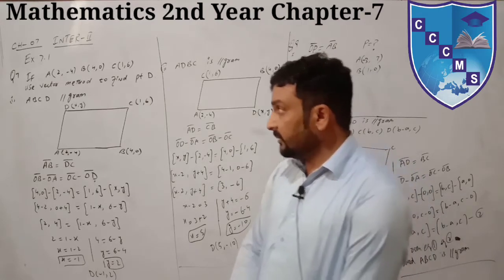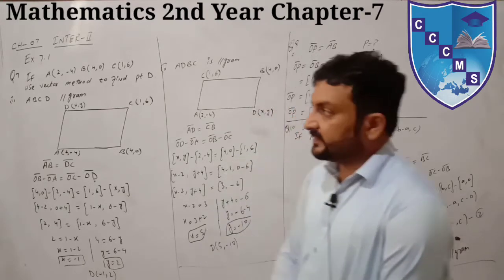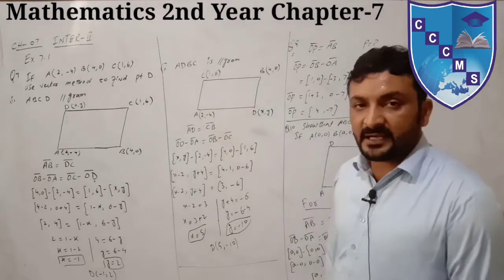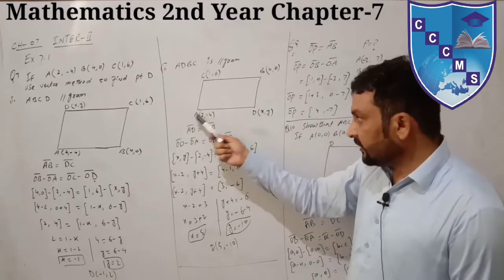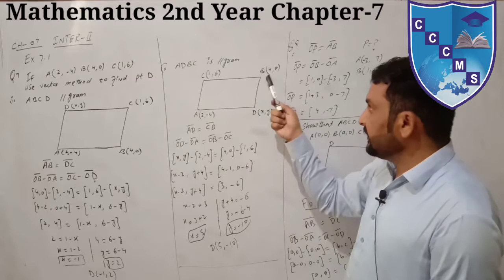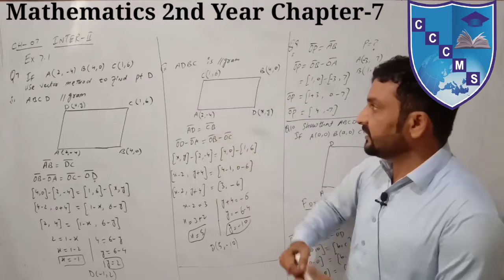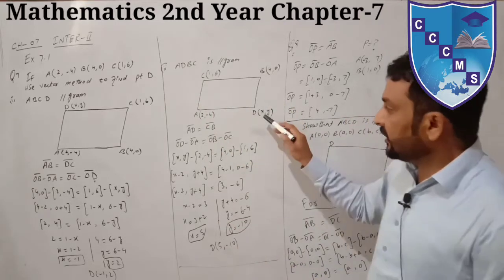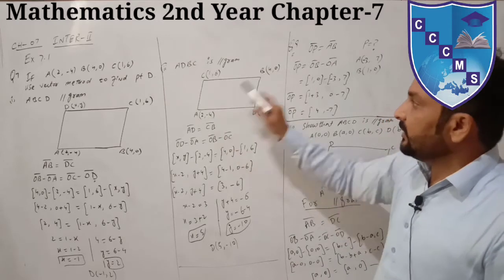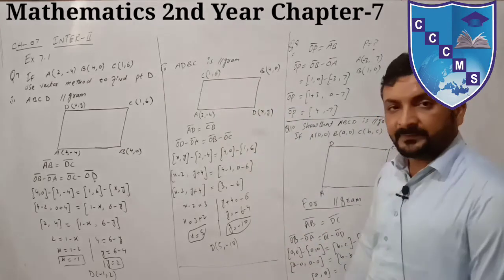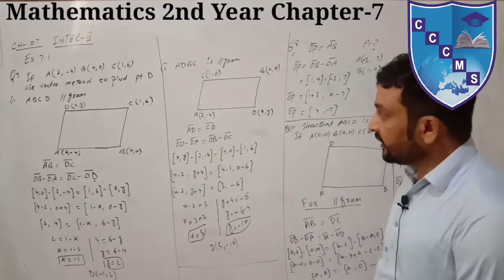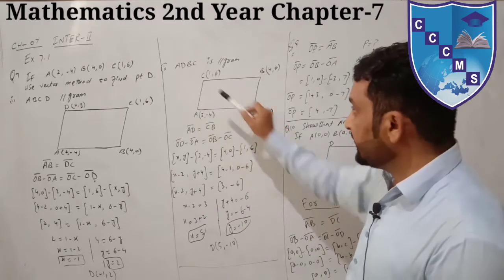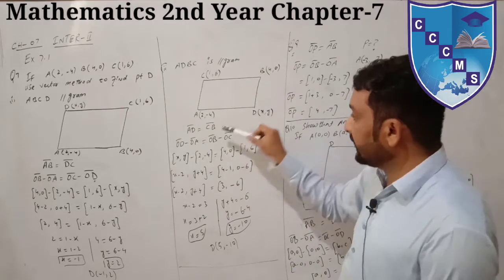We have found the D coordinate. Now the second part: here the parallelogram arrangement is different - D, C, B, D. Given points, find x and y for this configuration.